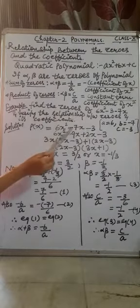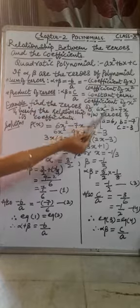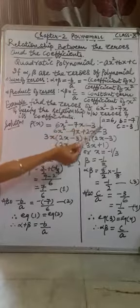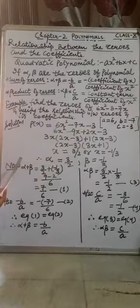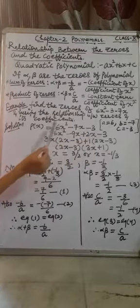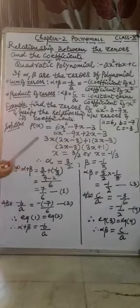We are provided with a polynomial. In the general form of a quadratic polynomial, the x term comes in the middle, so first we will rearrange the given polynomial to get 6x squared minus 7x minus 3. Now we will do middle term splitting. The value of a is 6, b is minus 7, and c is minus 3.